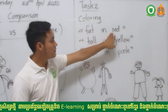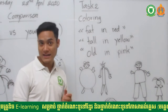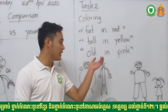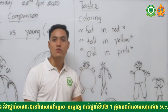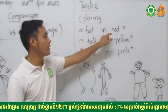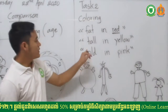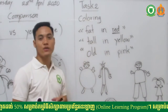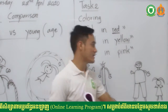First instruction: fat — color in red. Find the picture of the fat person and color it red, not yellow, pink, or blue. Second instruction: tall — color in yellow. Find the tall picture and color it yellow.